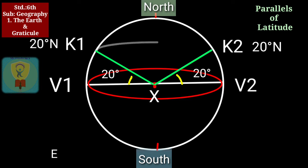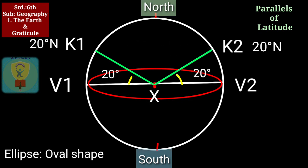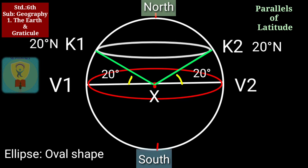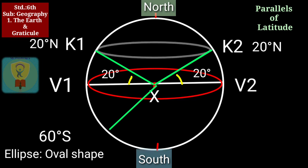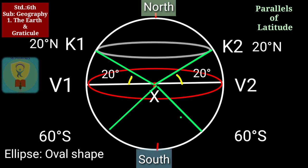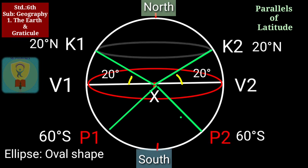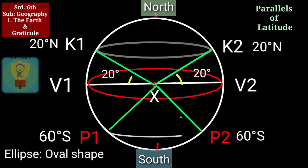Draw an ellipse joining K1 and K2. Now in the lower half of the circle, form an angle of 60 degrees as above, and name the points on the circle as P1 and P2. Now join these points by drawing an ellipse.